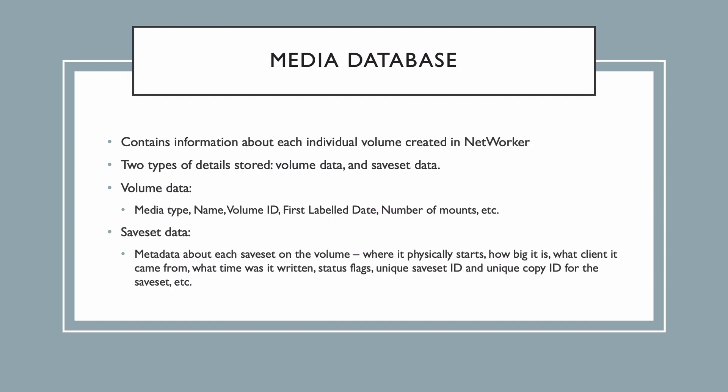Backup products have to keep track of backup media, and that's what the media database is for in networker. It contains information about each volume that's been labelled in networker. For each volume in the media database, networker maintains two types of information: volume and save set data. Volume data refers to information such as the media type, like tape and tape format, disk and disk type, and the volume name.